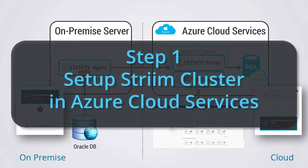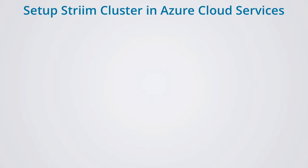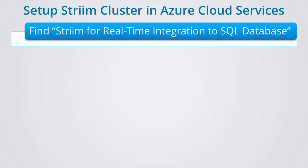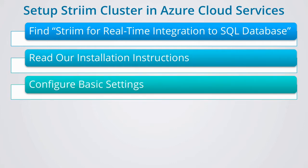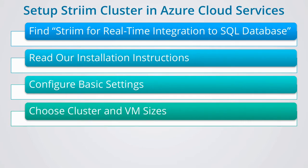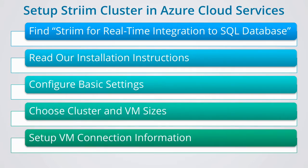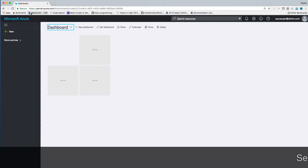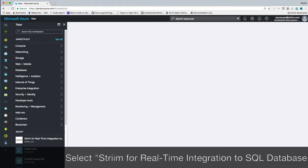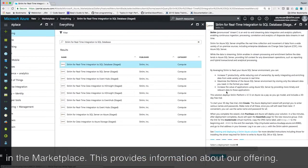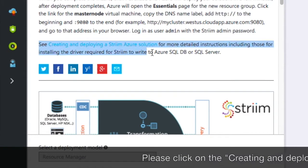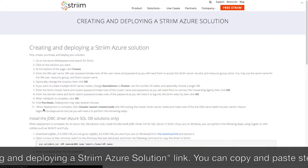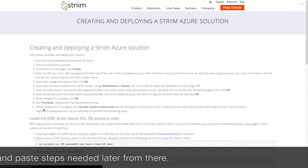In this first step you're going to set up a stream cluster in Azure cloud services. To do this you'll need to locate the stream for real-time integration to SQL database offering in the marketplace. Very importantly, you should read our installation instructions to familiarize yourself with all the steps. The setup is easy — you just need to configure basic settings, choose your stream cluster size and VM sizes, and enter information that allows you to connect to the stream VMs. Let's start by selecting the stream for real-time integration to SQL database offering in the Azure marketplace. This provides information about our offering and guides you to review our installation instructions. Please take time to click on this link, as it gives you clear instructions you can copy and paste for installing the Azure SQL DB JDBC driver you'll need later.